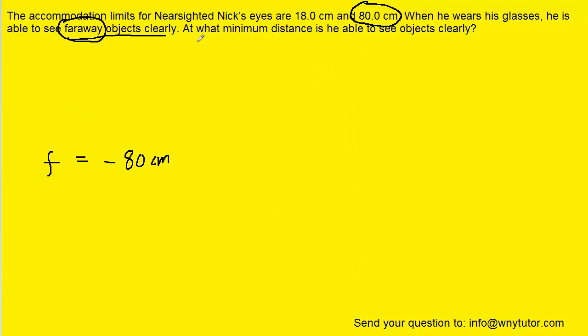Now on to the question, which asks, at what minimum distance is he able to see objects clearly? In that case, the question is asking us for an object distance. So we're going to be calculating a new p value.